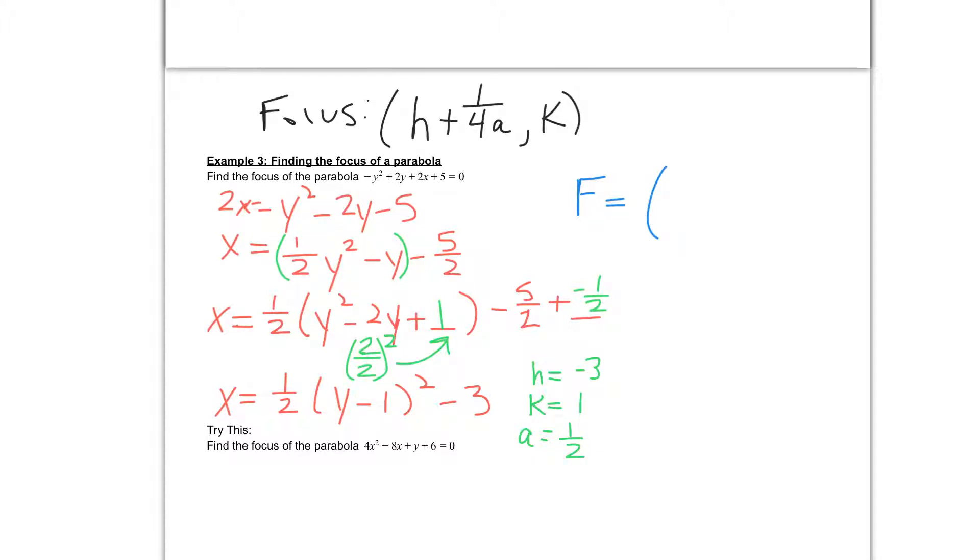So if I put this into my problem, I get h, which is negative 3, negative 3 plus 1 over 4 times 1 half, comma 1. And then you can put this in your calculator, or you can do it in your head, however you want to figure it out. But we need to do negative 3 plus 1 over 4 times 1 half. And if you calculate that, you should get that value to be negative 2.5, and then the 1 is not changing. So our focus is the point negative 2 and a half, comma 1.